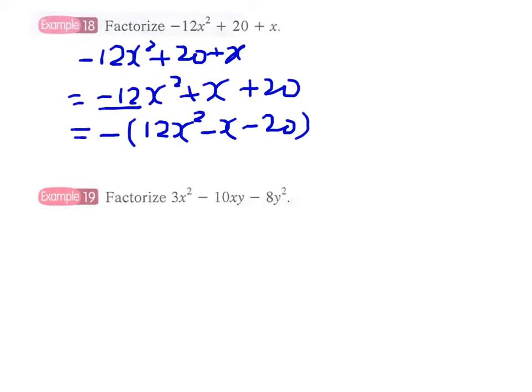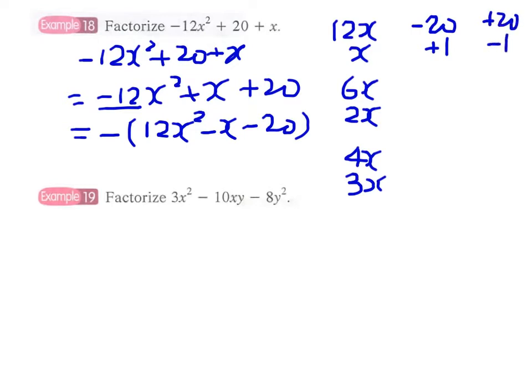Now we can list out the factors of 12x² and -20. We can have 12x times x, or 6x times 2x, or 4x times 3x. For -20, we can have -20 and +1, or +20 and -1, or -10 and +2, or +10 and -2, or -5 and +4, or +5 and -4.